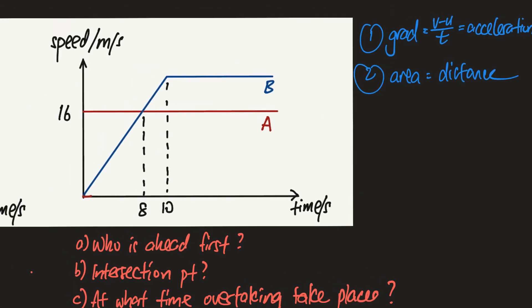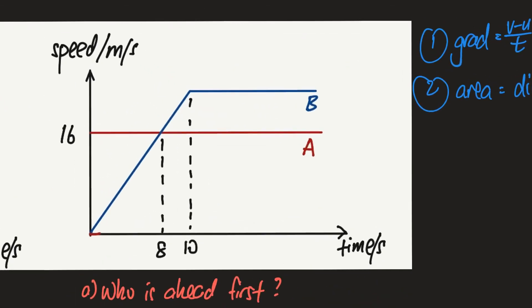Let's give this scenario some context. Imagine that from a starting point, car B is at the starting point, while car A is coming from behind, always moving at a constant speed. When A reaches the starting point side by side with B, that is where the race starts. B starts from rest, while A continues to move at a constant speed of 16 meters per second.